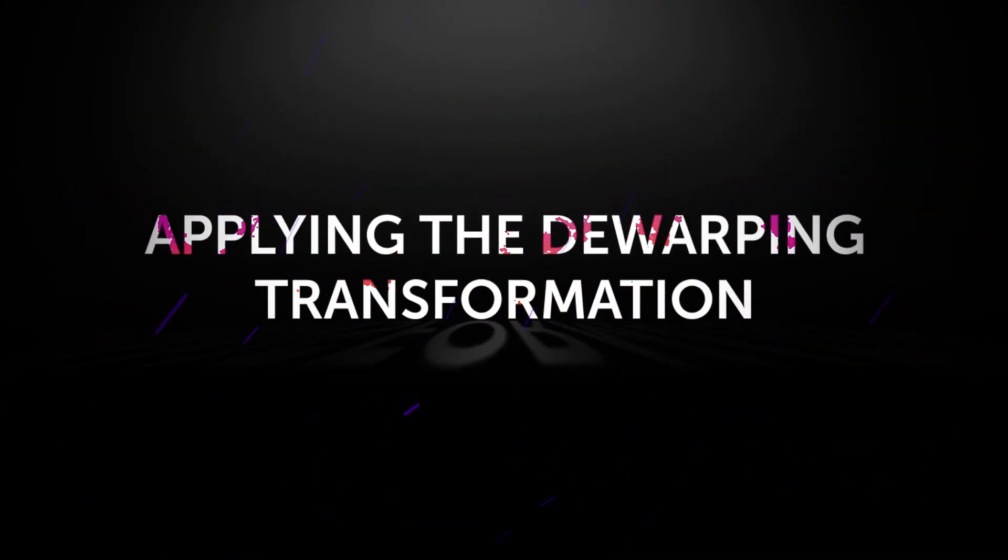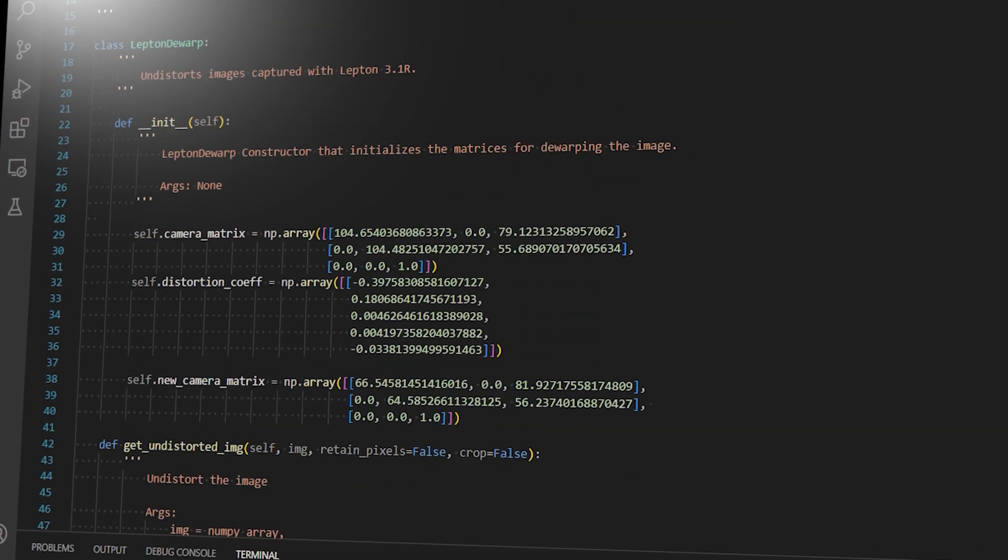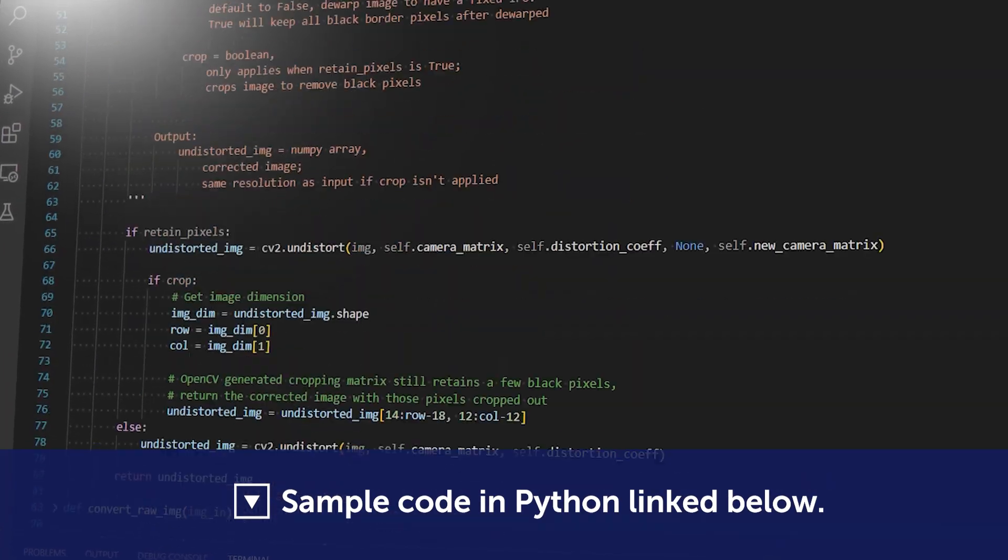These matrices, along with the input image, are passed into the following OpenCV built-in function to correct the camera to image plane mapping.